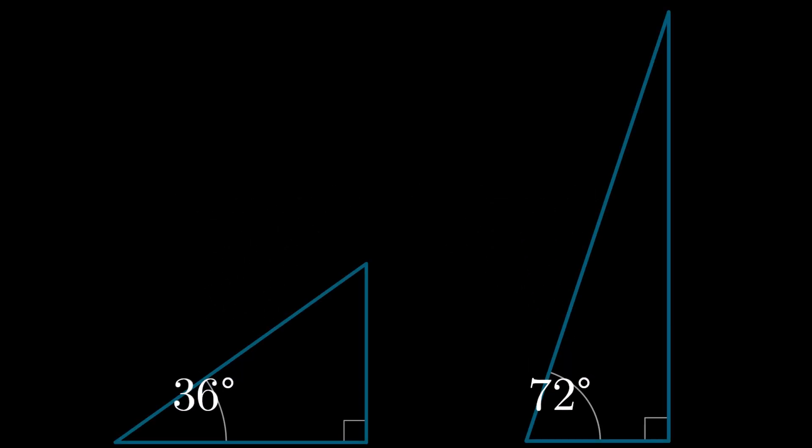36 degrees and 72 degrees aren't typically portrayed as special angles in trigonometry. So it might be surprising to see that the cosine of 36 degrees minus the cosine of 72 degrees equals exactly one half.